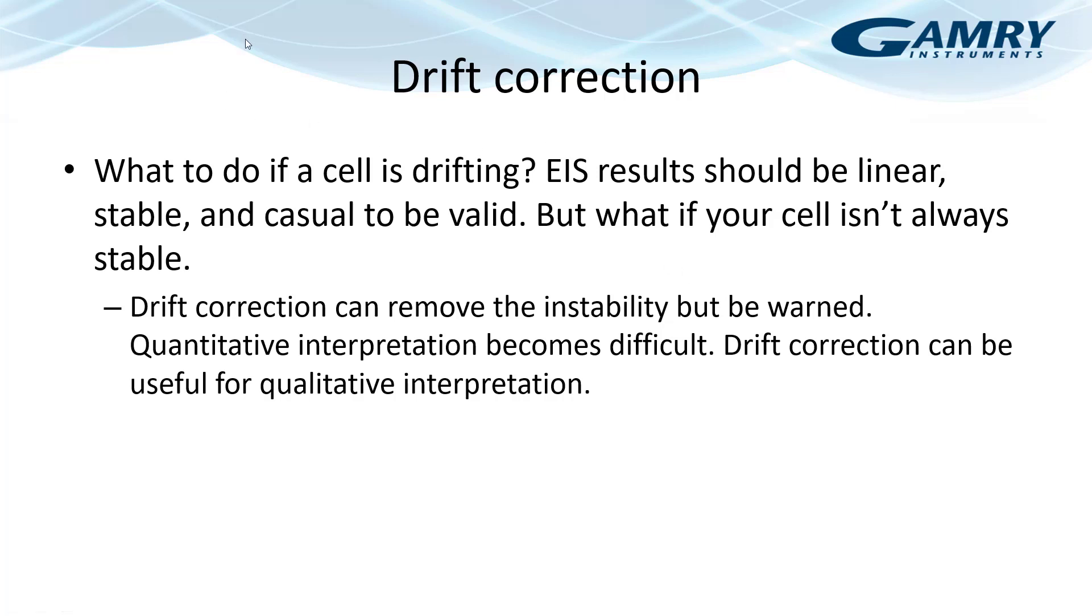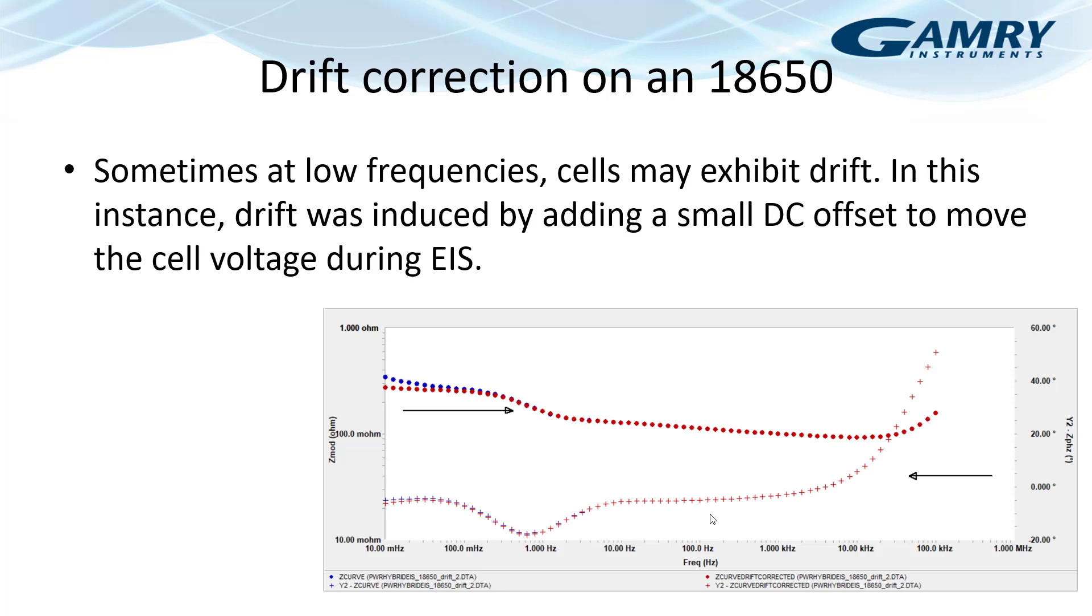So let's move on to drift correction to try to speed things up. There's lots of times that you might run into a cell where as you go to lower and lower frequencies, that cell voltage is drifting. In order for EIS results to be valid, they need to be linear, stable and causal. And if your cell is drifting, then you have a problem. So drift correction can be used to remove this instability. But we want to warn you that once you apply this drift correction, quantitative interpretation becomes rather difficult. And personally, we would recommend drift correction is used for qualitative data interpretation. Otherwise, people would question the validity of your data. But again, as you saw, it can be applied.